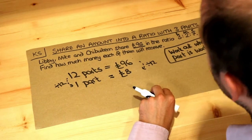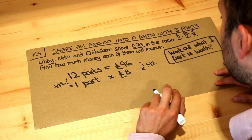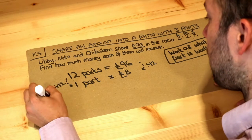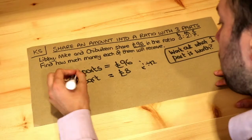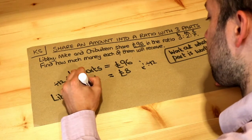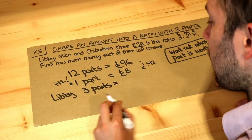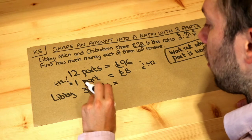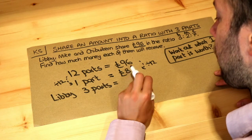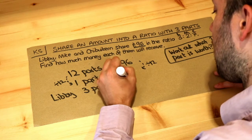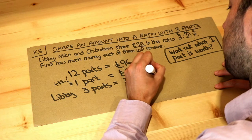Now let's think about how many parts each person has. Libby has three parts in the ratio, so three parts is three times as much as one part — three times £8 would be £24.